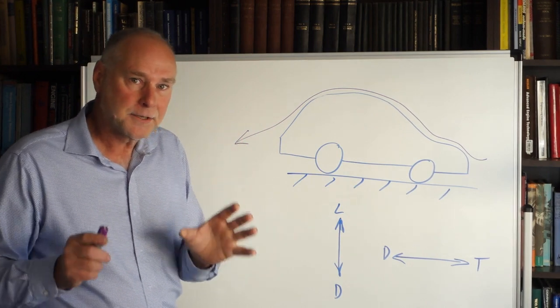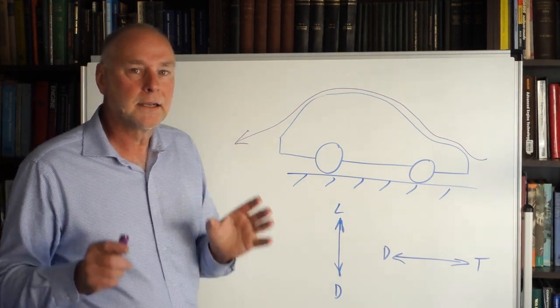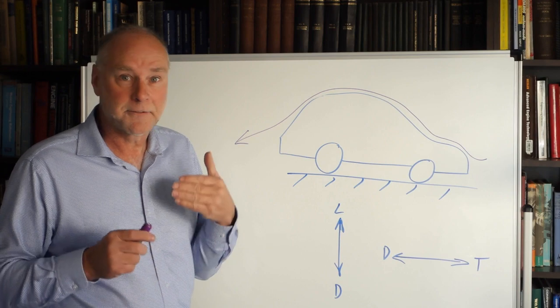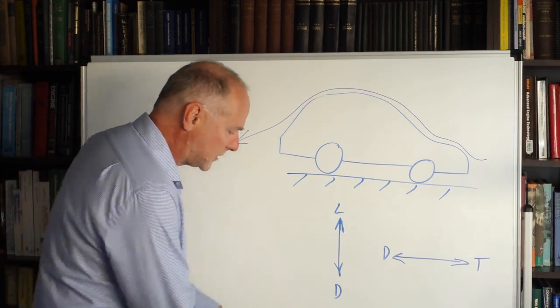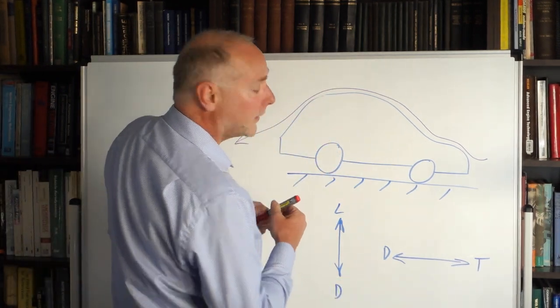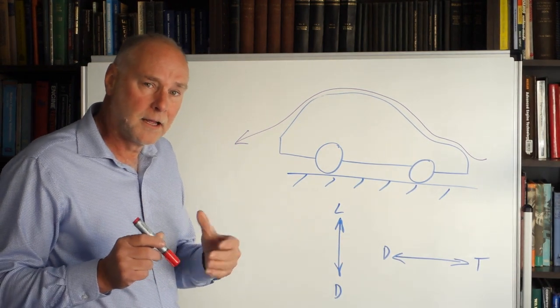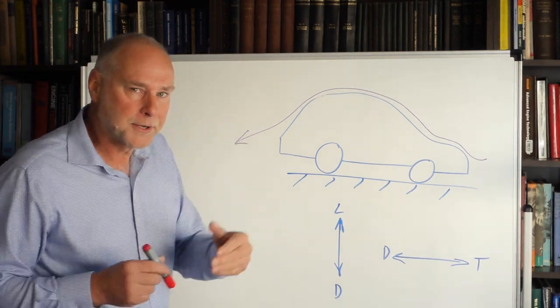Now the first step in determining that is to draw in what's called a vector which is just a force arrow and let me do that. So we're going to draw in a force vector at right angles to the body surface.